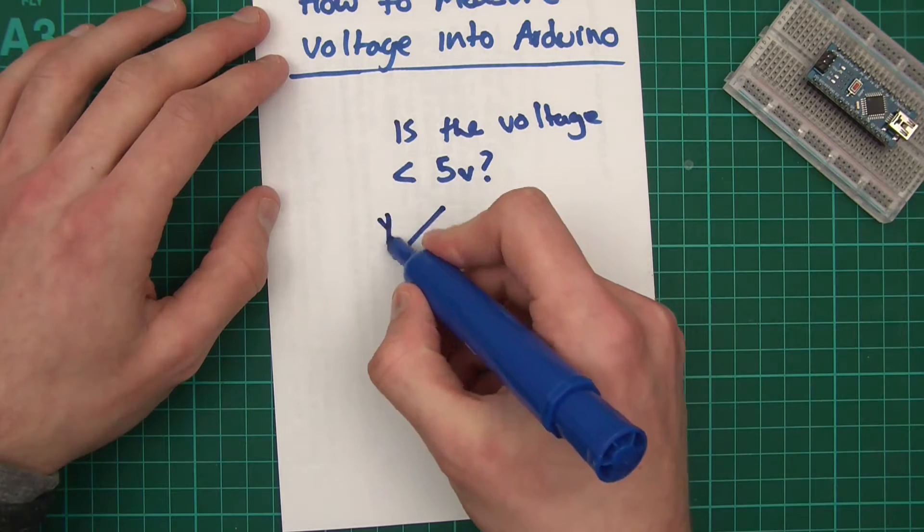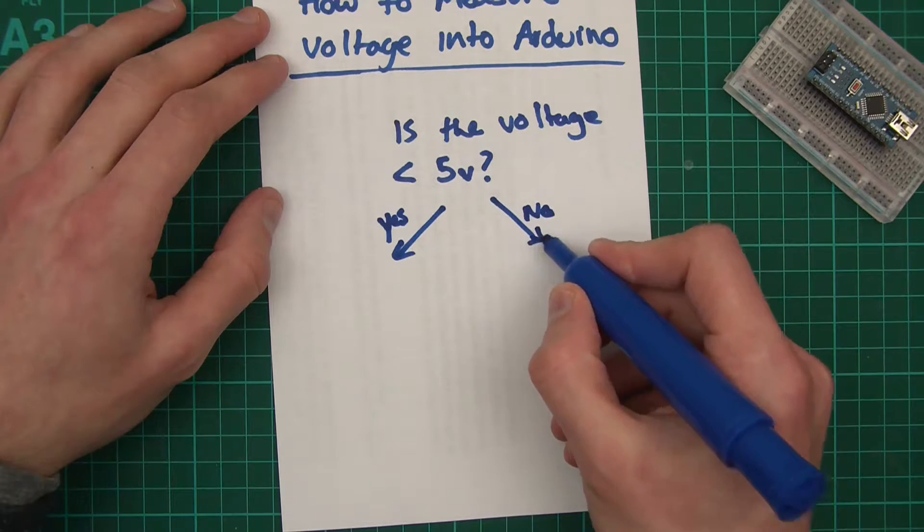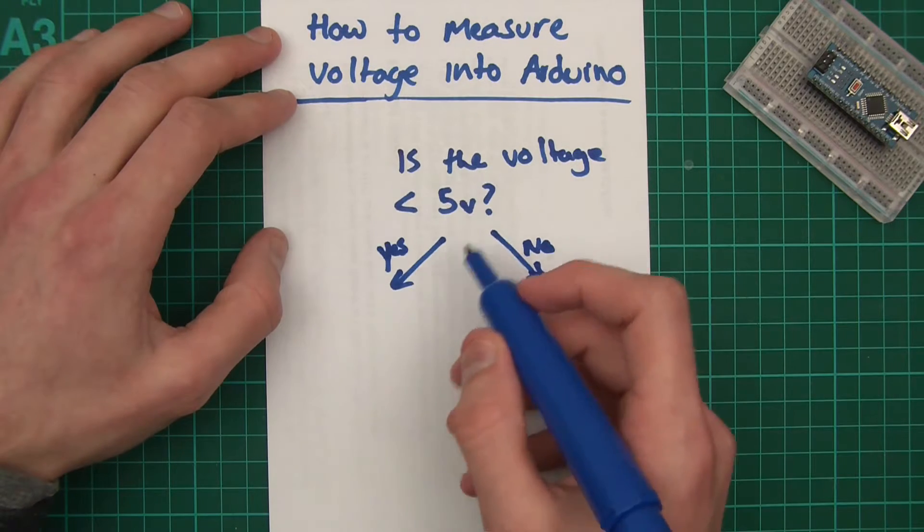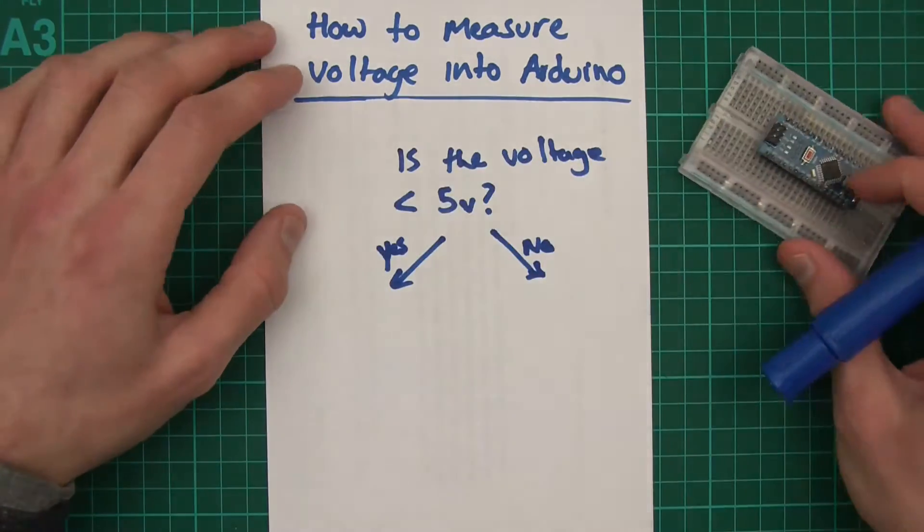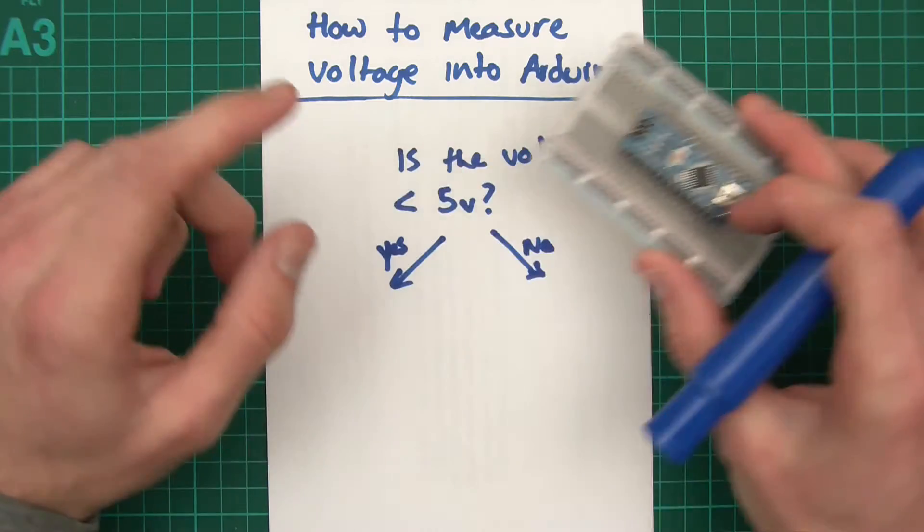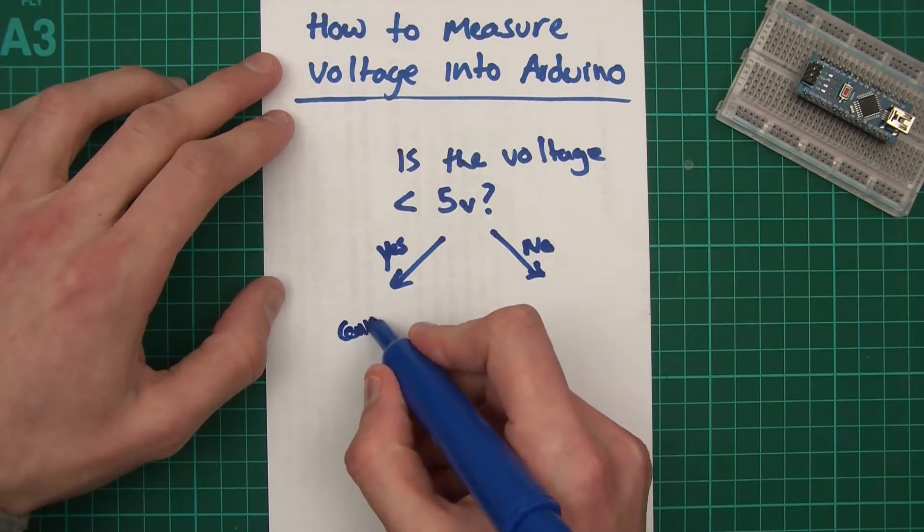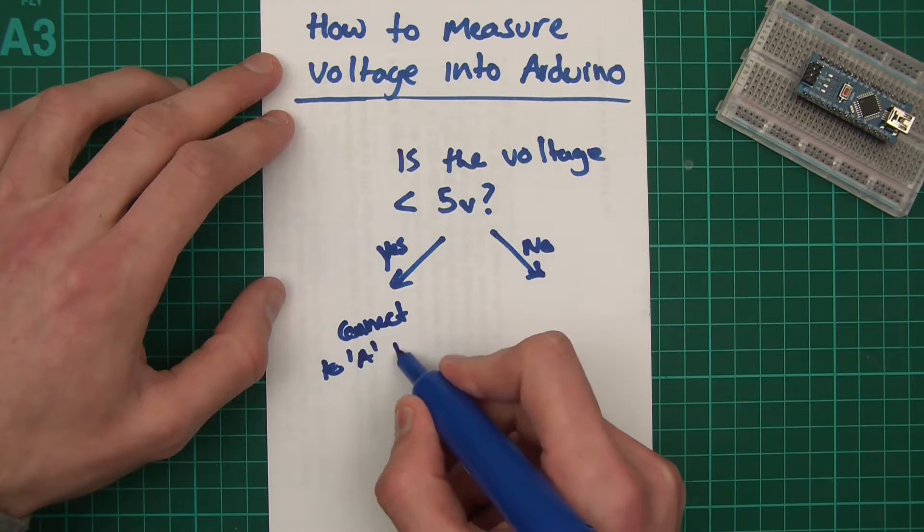Is the voltage less than 5V? If it is, yes. If it's not, then no. If it is, then you basically just connect the anode of whatever it is you want to input into this thing to the Arduino analogue pins, so A0 for example. If yes, then connect to an analogue pin.